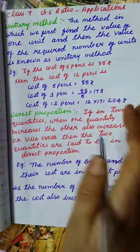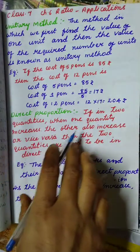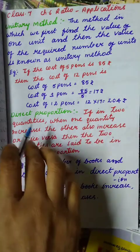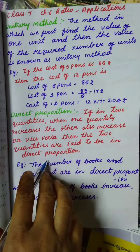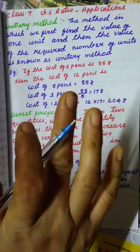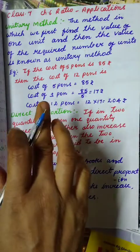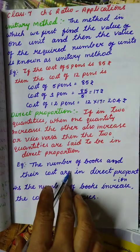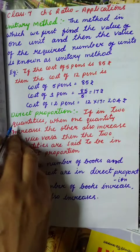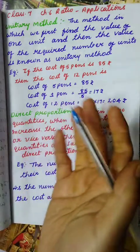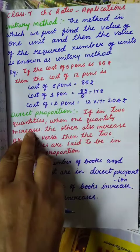In two quantities, if one quantity decreases, the other quantity also decreases. If in two quantities when one quantity increases the other also increases, and when one quantity decreases the other also decreases, then the two quantities are said to be in direct proportion. For example, the number of books and their cost are in direct proportion — as the number of books increases, the cost also increases. Opposite to this is indirect proportion: if one quantity increases, the other decreases, and if one quantity decreases, the other increases. That is called indirect proportion.